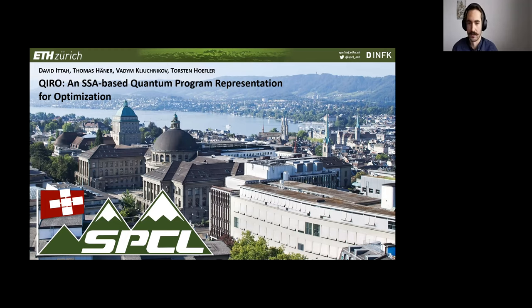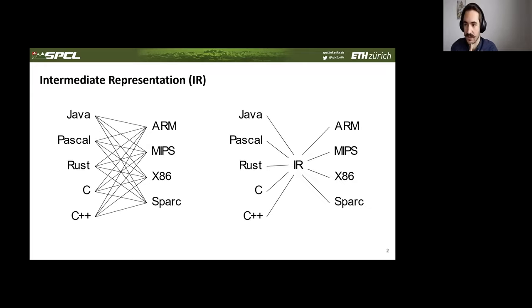So let's jump into this. To start with, I want to briefly introduce IRs and then look at the existing IRs that exist in the quantum space already. Intermediate representations fulfill multiple functions. The big one is being an intermediate step for translation, which greatly minimizes the number of translators one has to write between different program languages and processor architectures. But more importantly, it aids in program analysis and optimization.